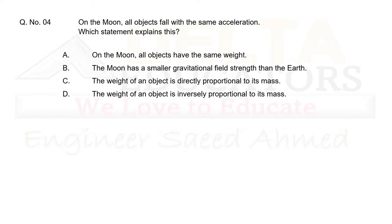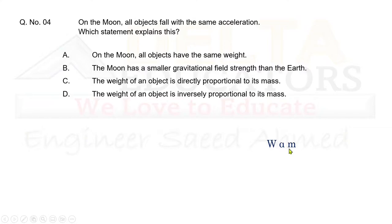Question 4: On the moon, all objects fall with the same acceleration. Which statement explains this? Option A — all objects have the same weight — is incorrect; weight depends on mass. Option B — the moon has a smaller gravitational field strength than the Earth — is correct but not related to the question. Option C — the weight of an object is directly proportional to its mass — is correct and explains why all objects fall with the same acceleration. Correct option is C.